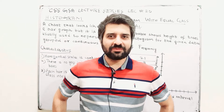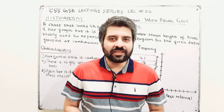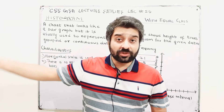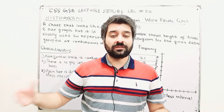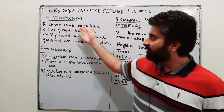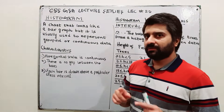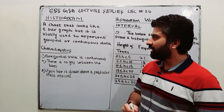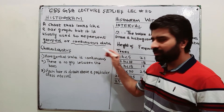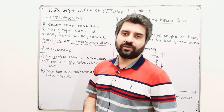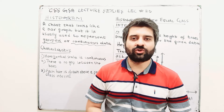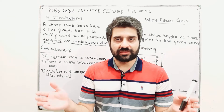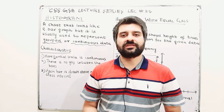Histogram is used to display data, to display observations, and to analyze observations in a better way. A histogram is a chart that looks like a bar graph but without spaces — when bar graphs have spaces, as I told in my previous lecture. It is usually used to represent group data or continuous data. So if you are asked about the difference between a bar graph and a histogram, the first difference is bar graphs have bars with spaces, while histograms don't have spaces between the bars.